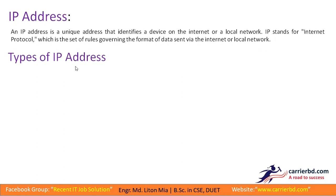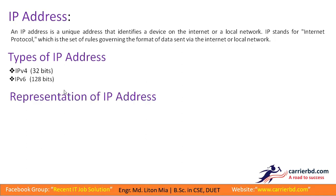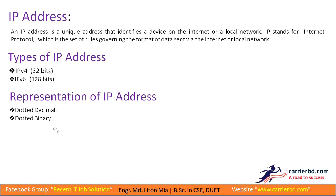Now, types of IP address. There are 2 types of IP address: IPv4 and IPv6. These are different parts of the IP address. The IP address can be represented in dotted decimal or dotted binary format.